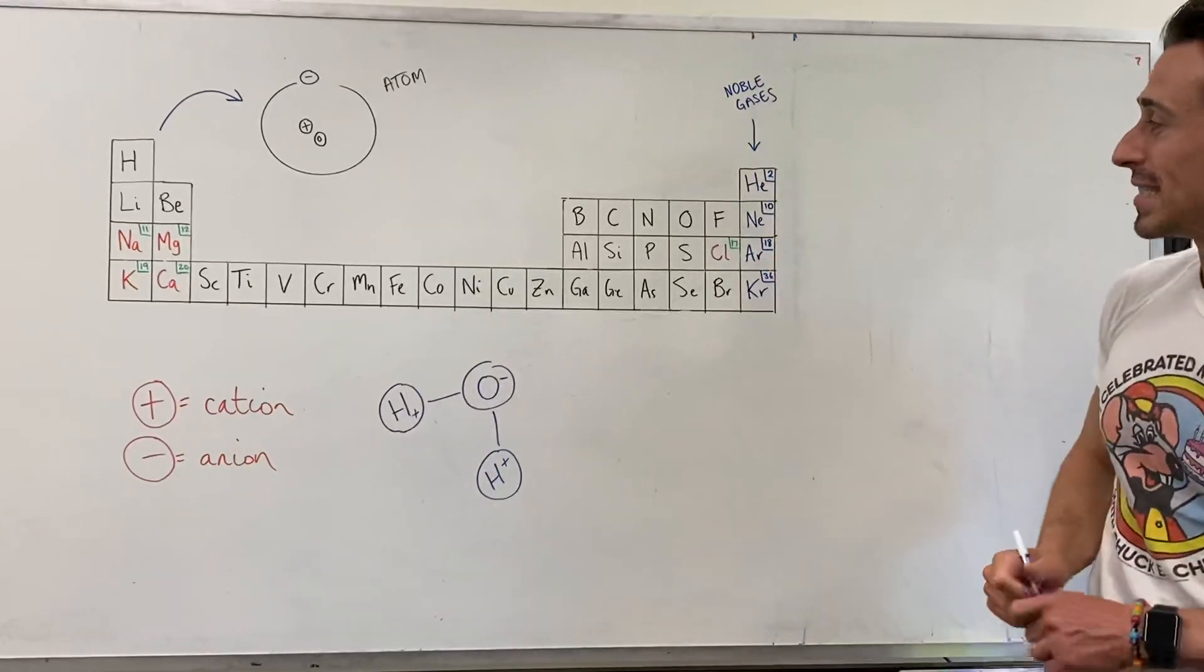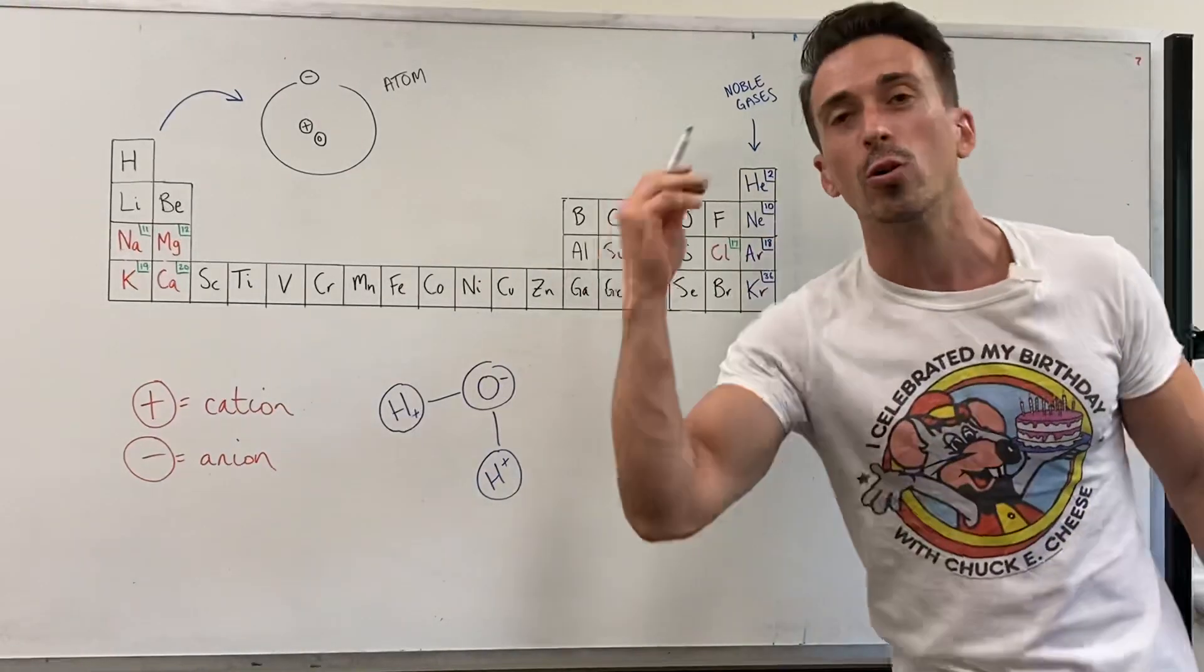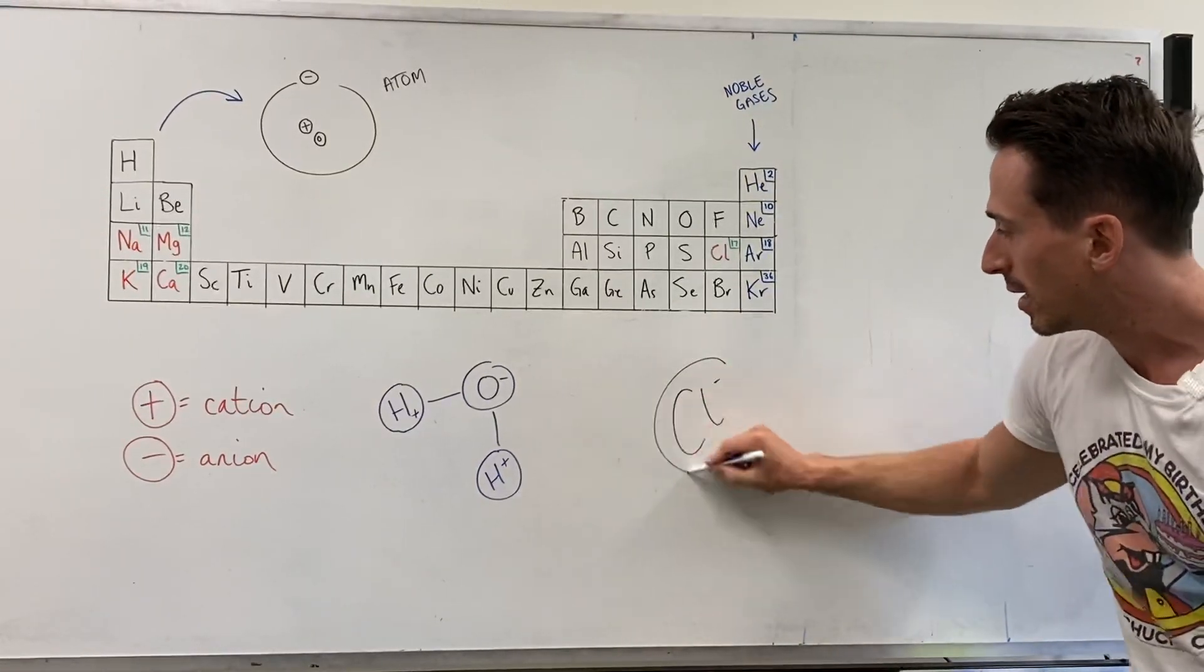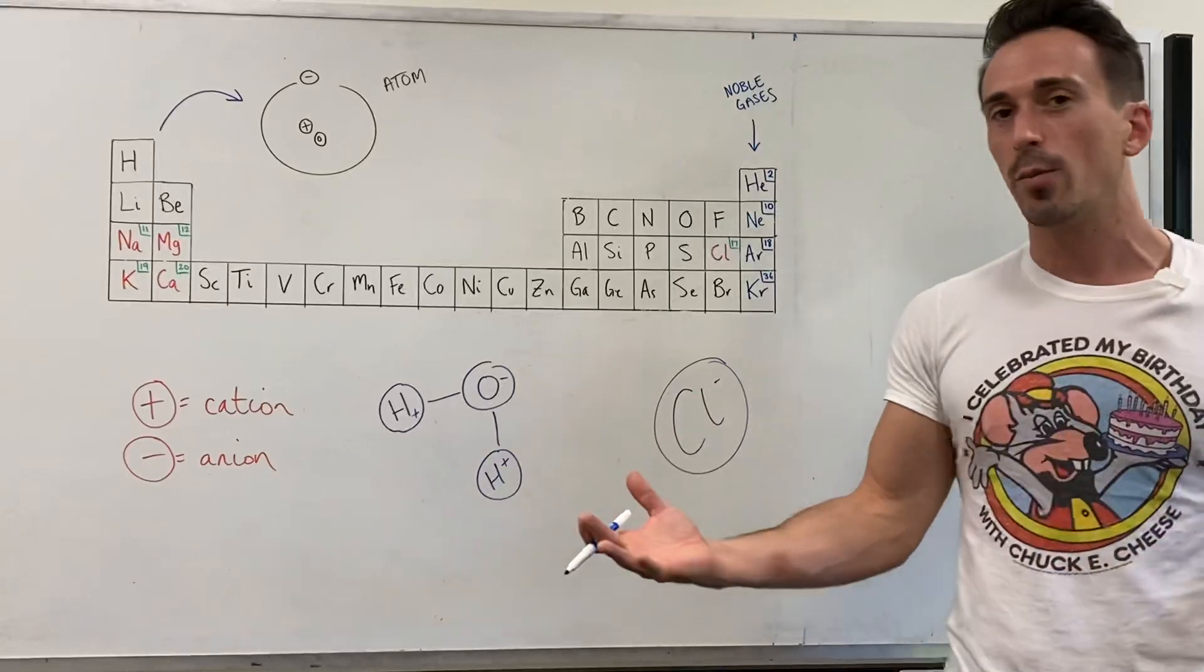Chlorine has 17 electrons, wants to be like argon with 18. How does it do it? It needs to gain an electron. So chlorine will become Cl negative. That's the only way to be happy.